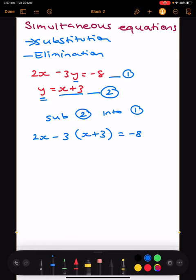If we expand this, we end up with 2x - 3x - 9 = -8. When expanding brackets, we do -3 times x and then -3 times 3.